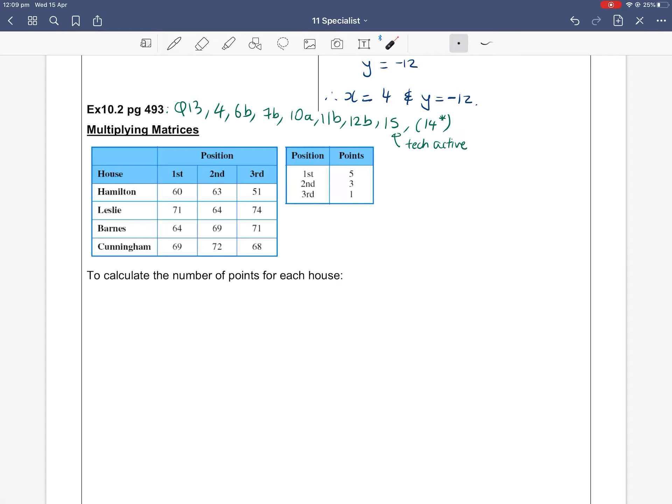To introduce this concept, I'm going to use this starting scenario. This school has four houses just like ours with Hammershund, Youthland, Gandhi and Schweitzer. So this school has four houses: Hamilton, Leslie, Barnes, and Cunningham.